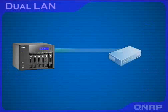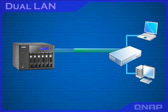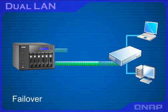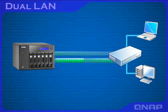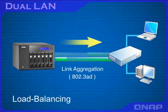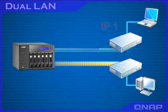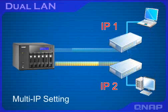The TS-639 PRO provides 2 Gigabit LAN ports for different configuration options. Failover allows the NAS to sustain the failure of a network cable or network port to provide continuous service. Load balancing aggregates the total bandwidth of the two LAN ports to boost file transfer speed. You can also set up two IP addresses on the NAS for sharing among different workgroups on two subnets.